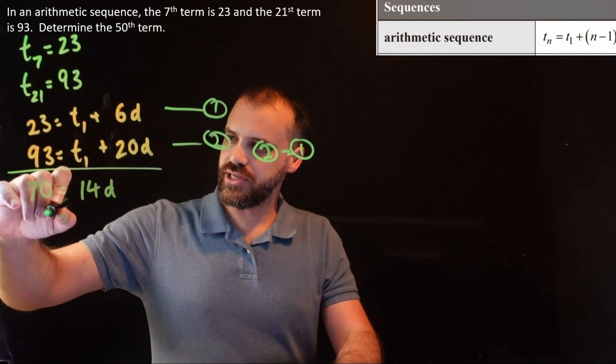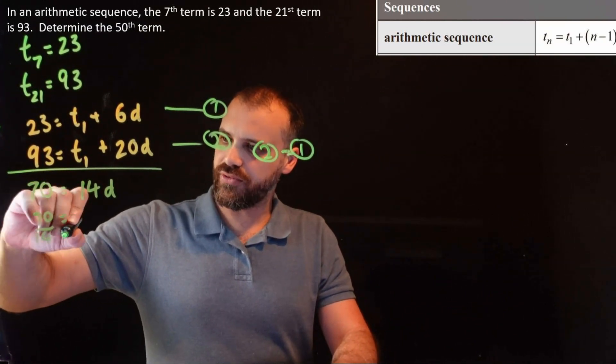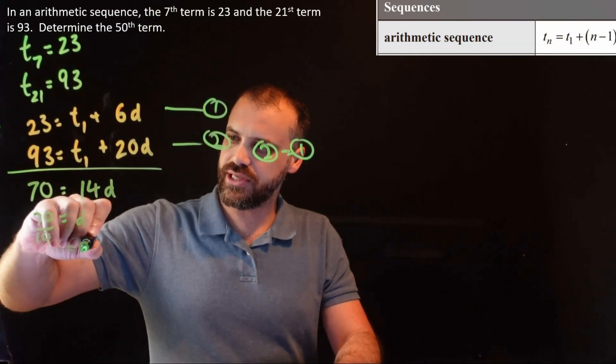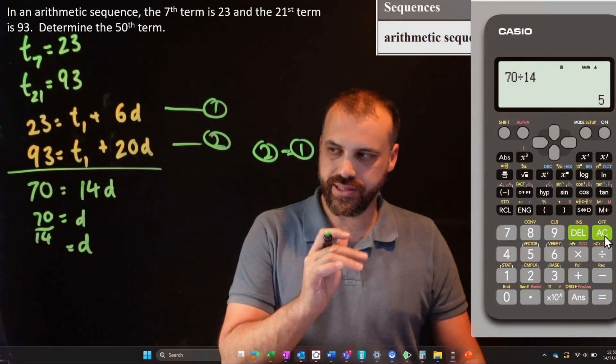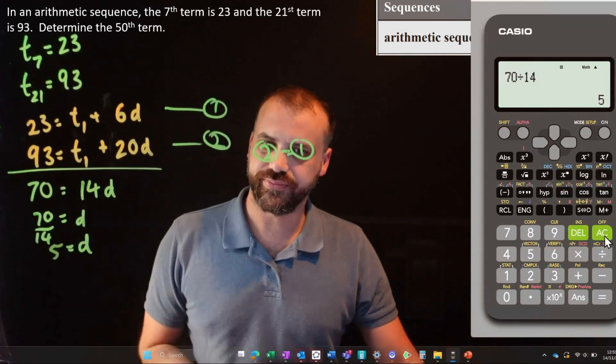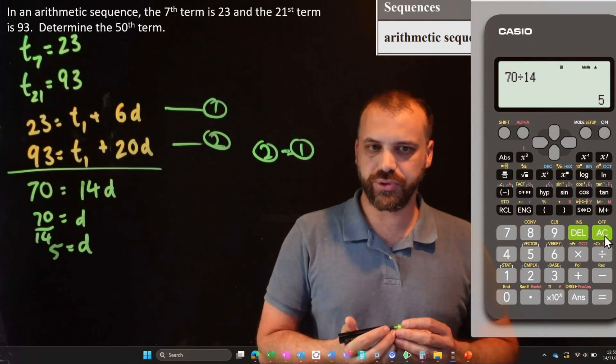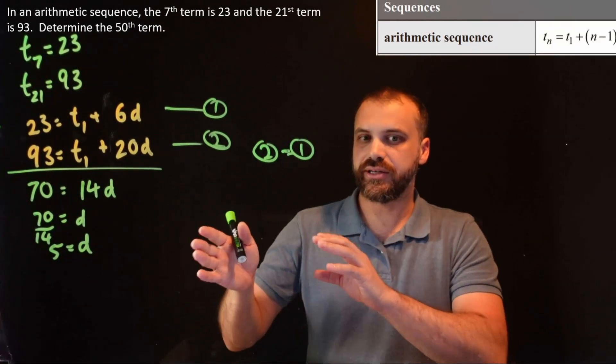Great. Now, if I just divide both sides by 14 I'll get 70 divided by 14 is equal to d. And that means that d is equal to 5. Simple, straightforward, great.